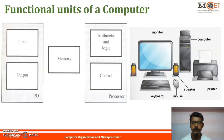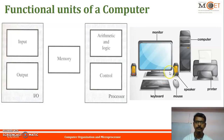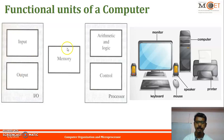The input unit accepts coded information from human operators, from electromechanical devices such as keyboards, or from other computers over digital communication lines. The information received is either stored in the computer's memory for later reference or immediately used by the arithmetic and logic circuitry to perform the desired operations. The processing steps are determined by a program stored in memory, and the results are sent back to the outside world through the output unit. All actions are governed by the control unit.